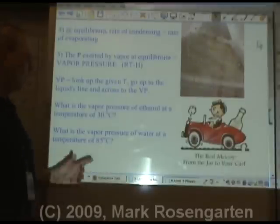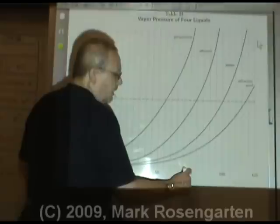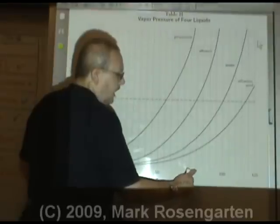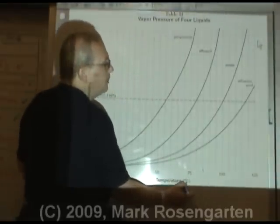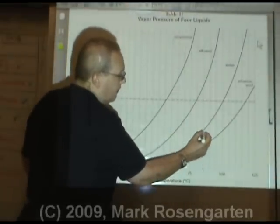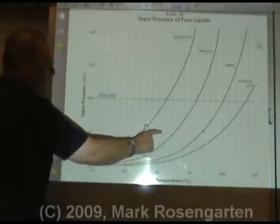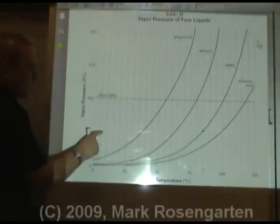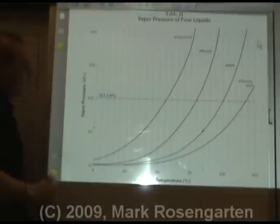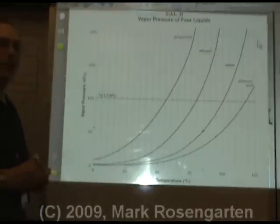What's the vapor pressure of water at a temperature of 85 degrees Celsius? We find 85 on the x-axis, go up to the line that says water, and then shoot across to the y-axis. It looks like about 56 or 57 kilopascals would be our vapor pressure.